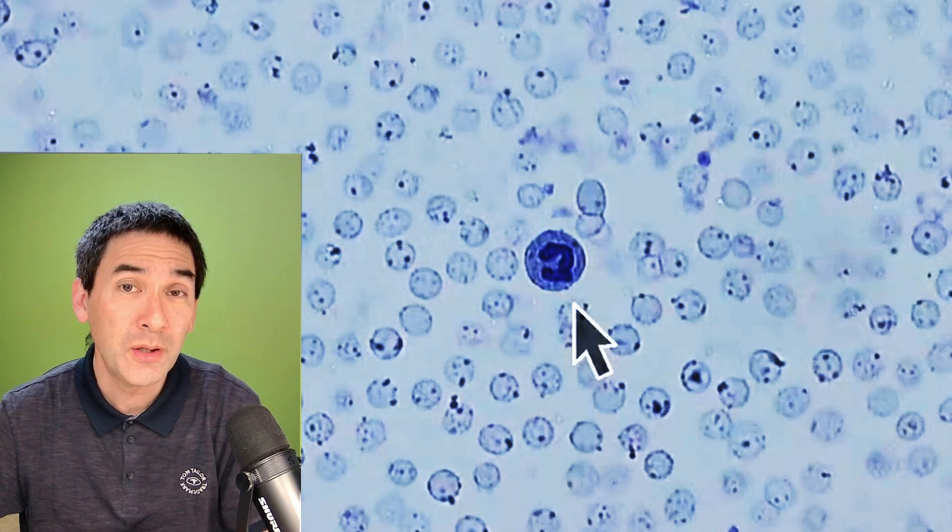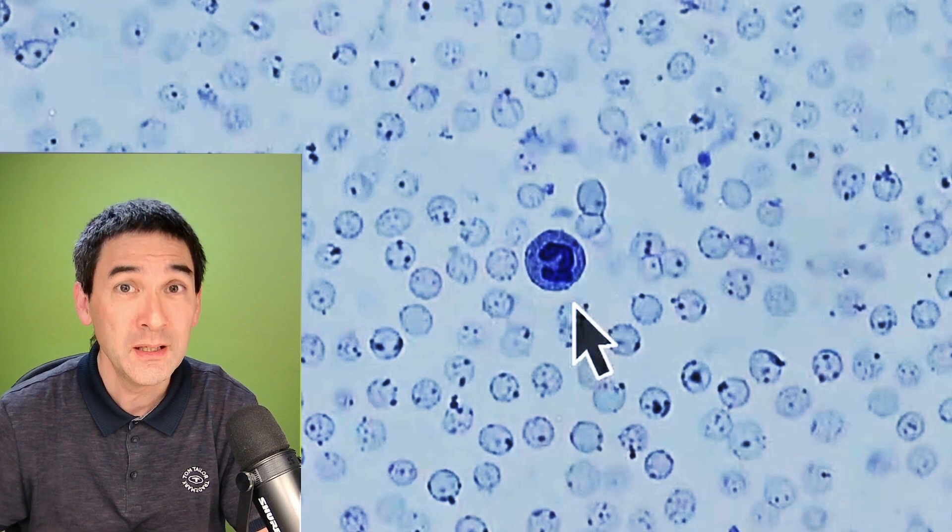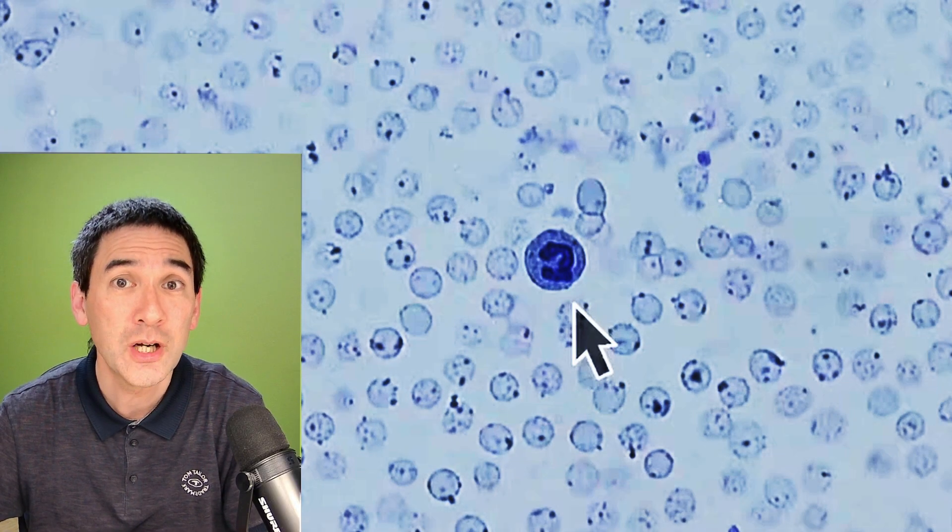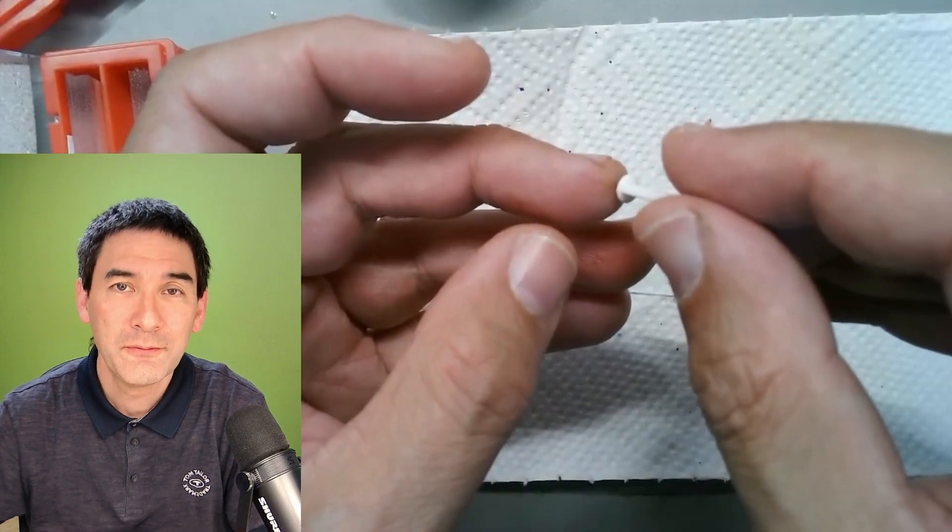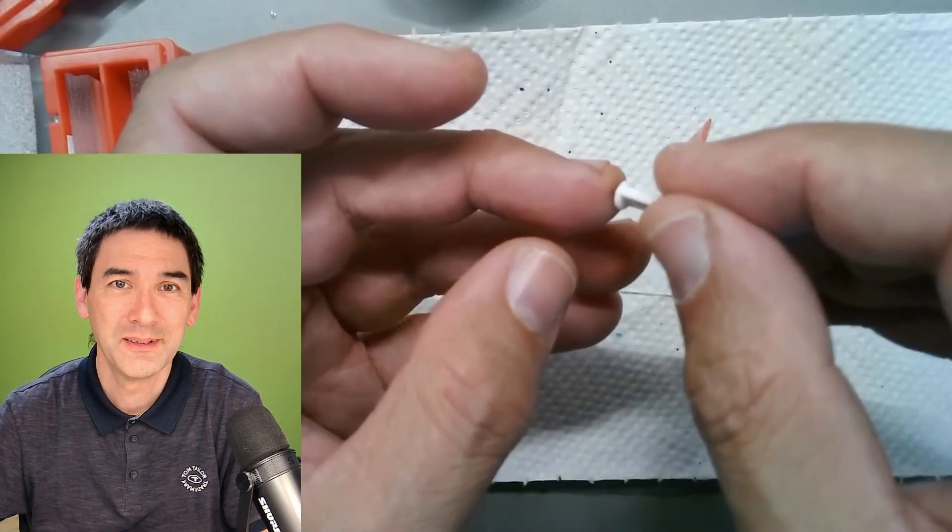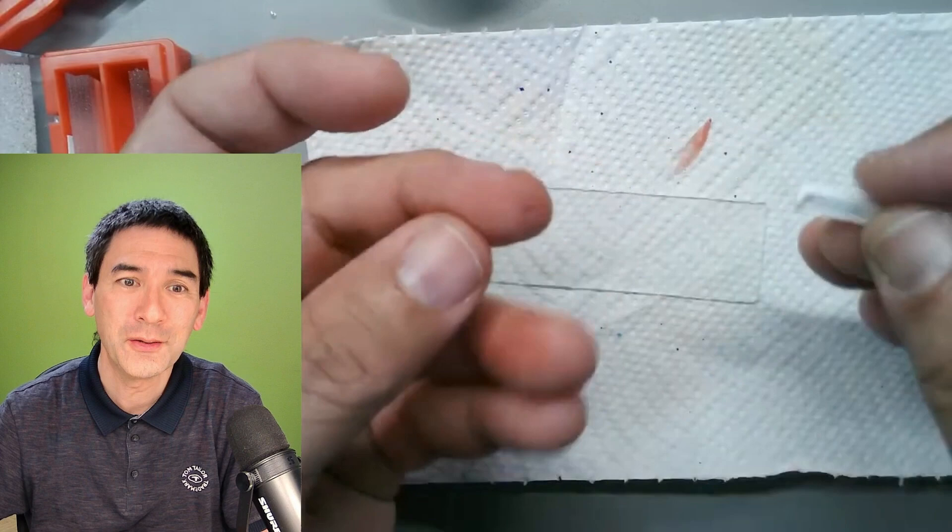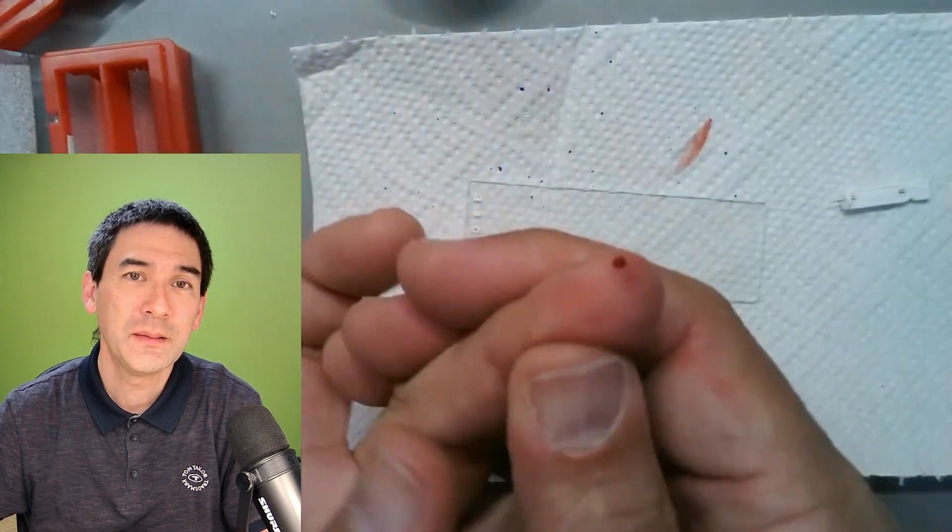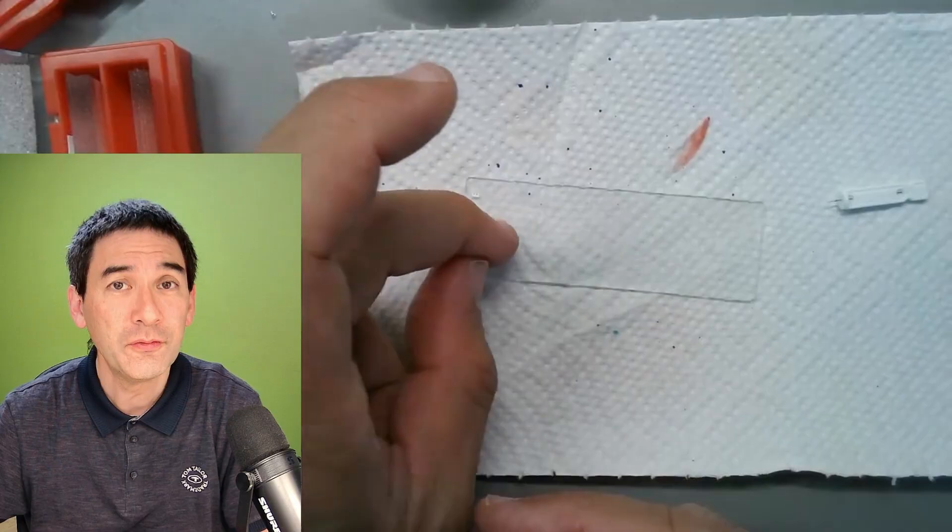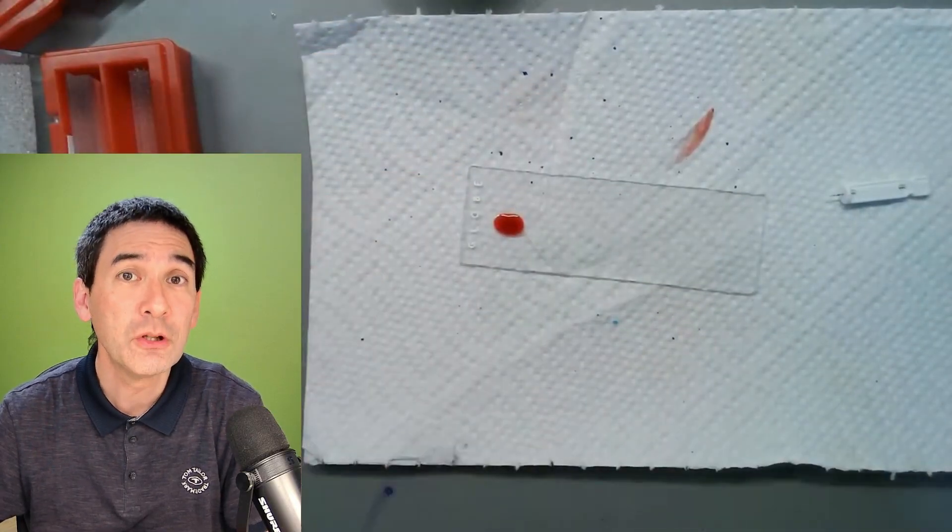Now I also want to show you a second way of actually observing blood and in this case we are going to use a large cover glass. Again I have to prick myself a little bit with the lancet and I'm trying to get a little bit more blood out in this case here and now I'm placing the drop of blood again on the side of the microscope slide and now I'm using a fairly large cover glass.